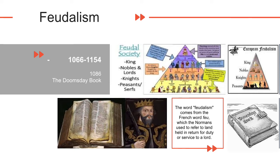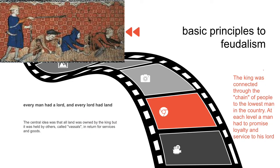The Domesday Book still exists and gives us an extraordinary amount of information about England at this time. There were two basic principles of feudalism: every man had a lord, and every lord had land. The king was connected through his chain of people to the lowest man in the country. At each level a man had to promise service to his lord. This promise was usually made with the lord sitting on his chair and his vassal kneeling before him, his hands placed between those of his lord. This was called homage and has remained part of the coronation ceremony of British kings and queens until now.